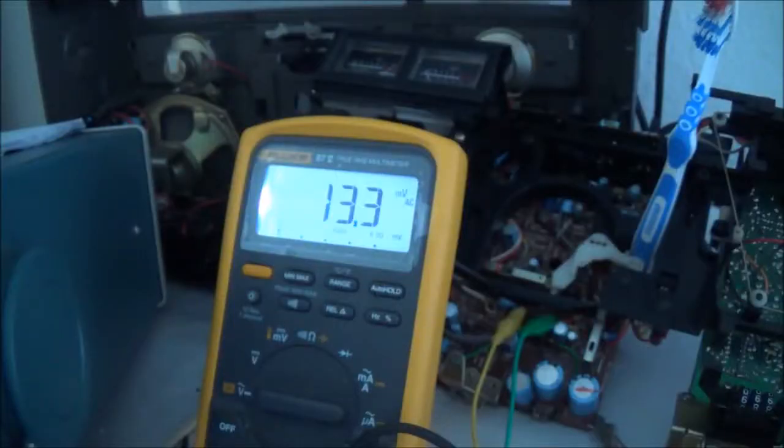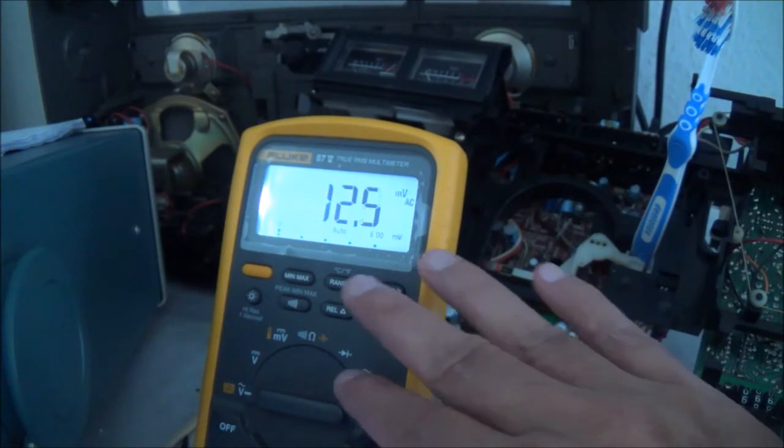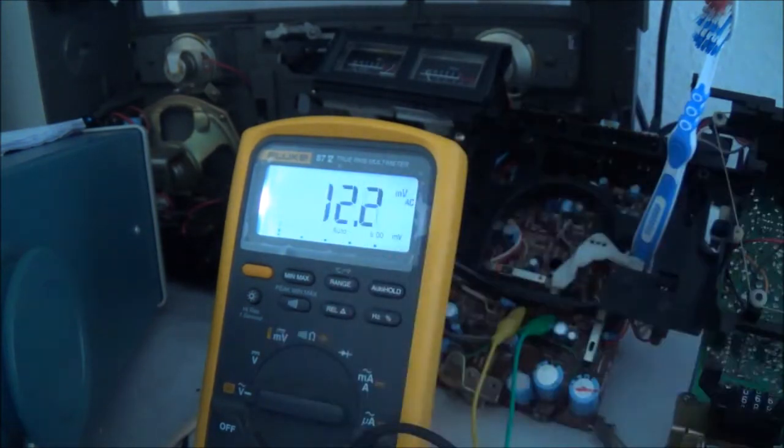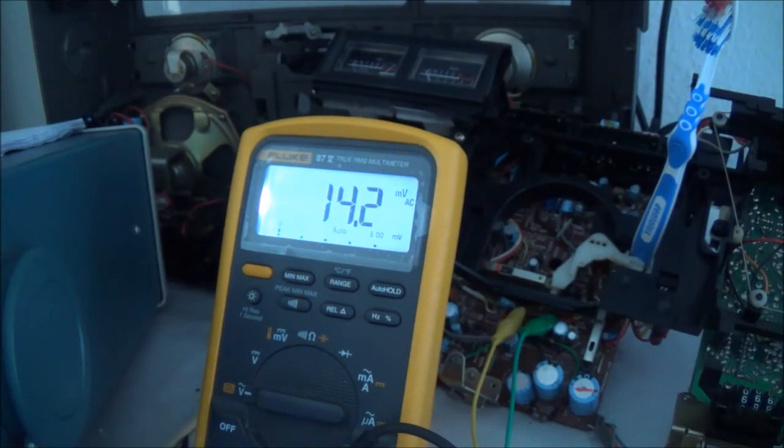To measure the frequency I'm going to use my digital meter here, but I can't use this meter to do the bias current measurement because it doesn't have enough frequency response. I can use it to check the frequency but I can't use it to check the voltage, it's going to give me inaccurate readings.